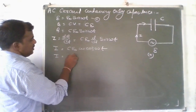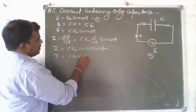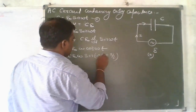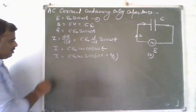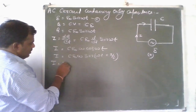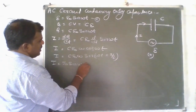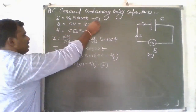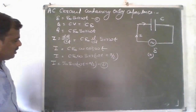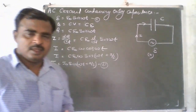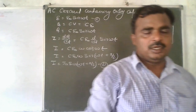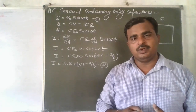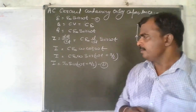So I equal to C E naught omega cos omega T, which can be written as I equal to I naught sine (omega T plus pi by 2), since cos theta equals sine (90 plus theta). Comparing the two equations, the current leads the EMF by 90 degrees. In a circuit containing only a capacitor, the alternating current leads the AC voltage by 90 degrees.